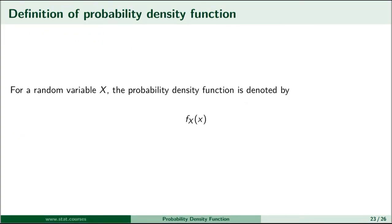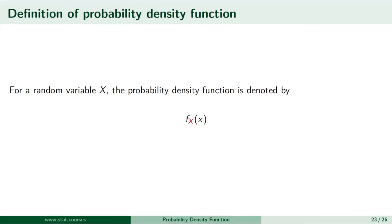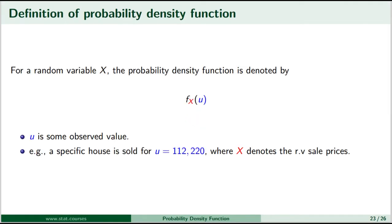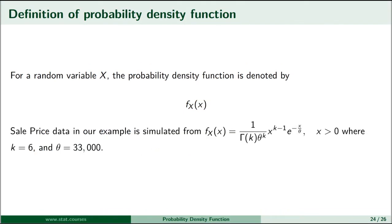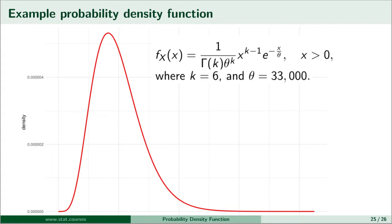Now let me introduce some notation for a probability density function. For a random variable denoted by capital X, the probability density function is denoted by f subscript X of x. The capital X denotes the random variable and the little x denotes some observed instance — I can replace the small x by something else like u and that should still work. I simulated the sale price data from a gamma distribution with shape parameter equal to 6 and a scale parameter of 33,000, and the probability density function of a gamma distribution is given by this formula.